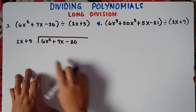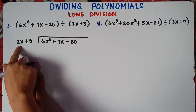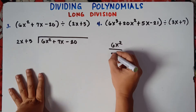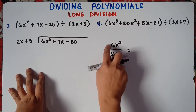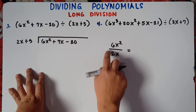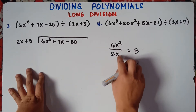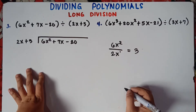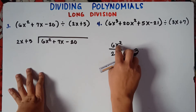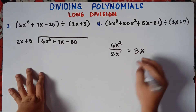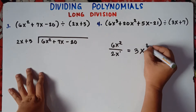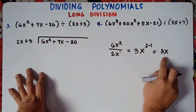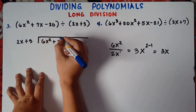And then you divide the leading term by the first term. So 6x squared divided by 2x. Divide the numerical coefficient: 6 divided by 2 is 3. Then x squared divided by x — understood that x has an exponent of 1. When you divide, simply copy the variable and subtract the exponent: 2 minus 1. So therefore, this is 3x. So 6x squared divided by 2x equals 3x.